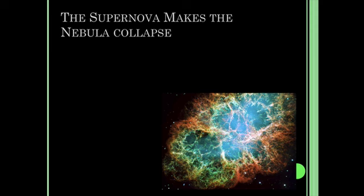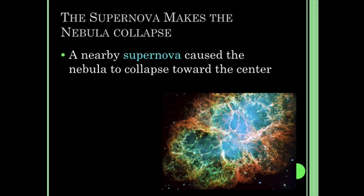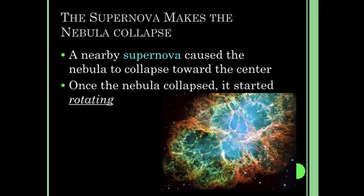Something nearby, probably a supernova, exploded, which makes the nebula begin to collapse. That caused it to collapse towards its center, and gravity is playing a major role in pulling the dust and gas towards that center. Once this happens, that nebula starts to rotate.